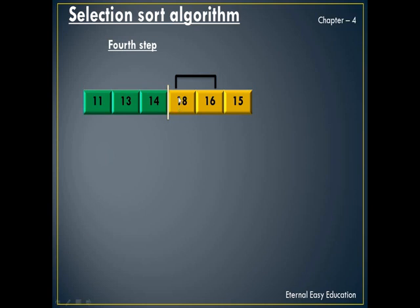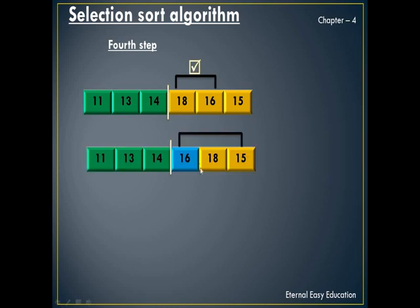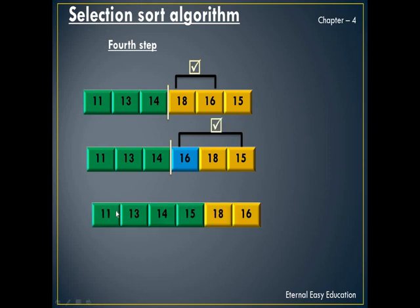Now 18 is compared with 16 — 16 is less, so swap. Now 16 is compared with 15 — 15 is less, so swap. The elements 11, 13, 14, 15 are all sorted.